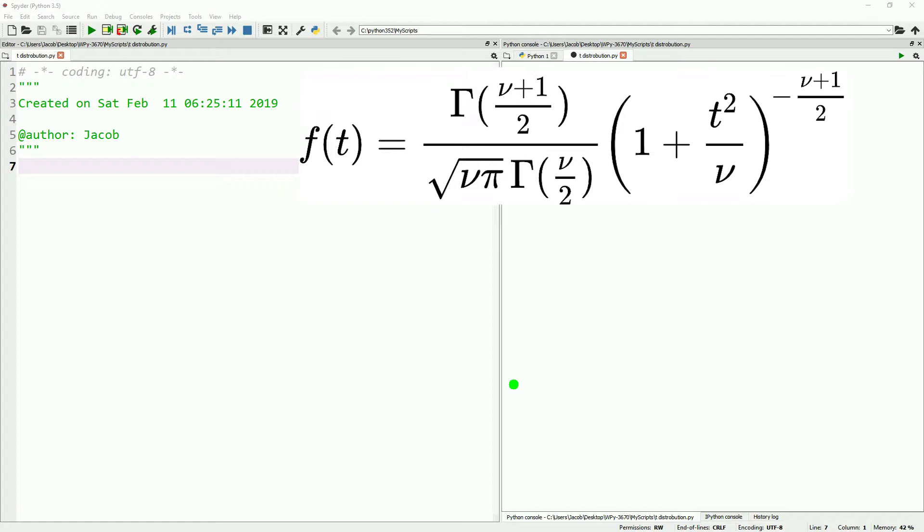Or rather, the group of distributions collectively known as the t-distribution. This is prerequisite to looking at things like confidence intervals, as well as the t-test itself.